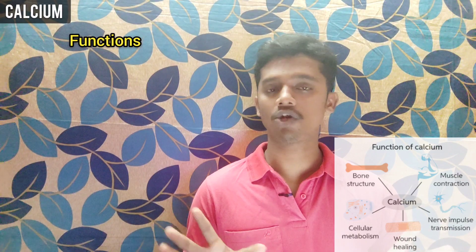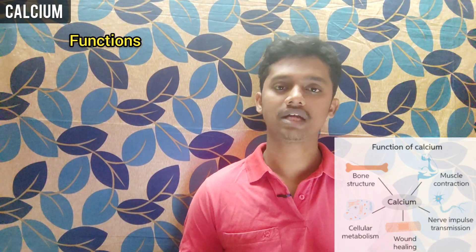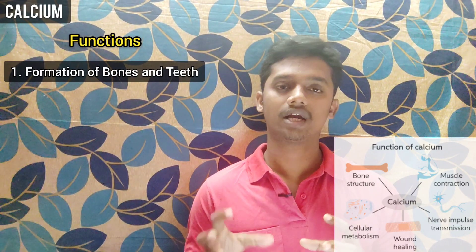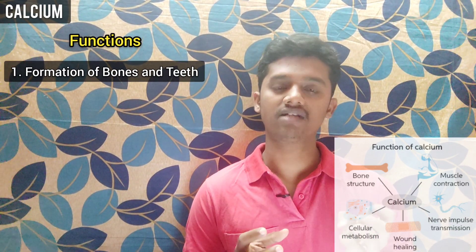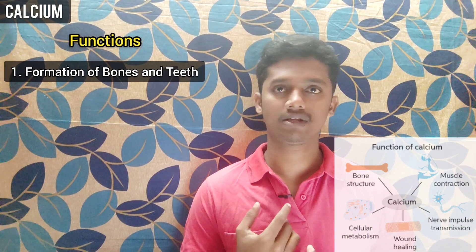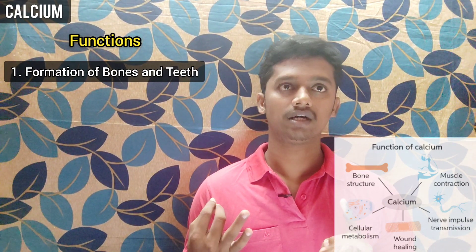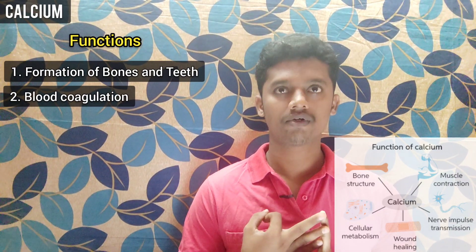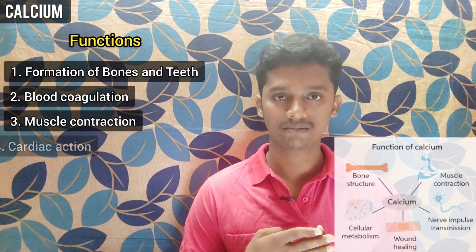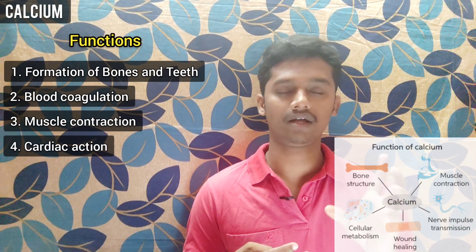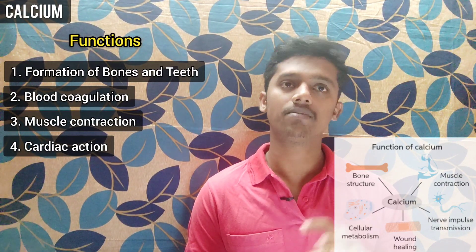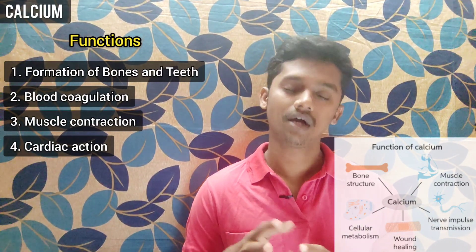The functions of calcium in our body are numerous. The major function is the formation of bones and teeth — these are the major sources of calcium in the body. Calcium also plays a role in blood coagulation, contraction of muscles, and cardiac action potential. In the heart, cardiac action potentials are generated with the help of calcium, and muscle contraction also involves calcium.